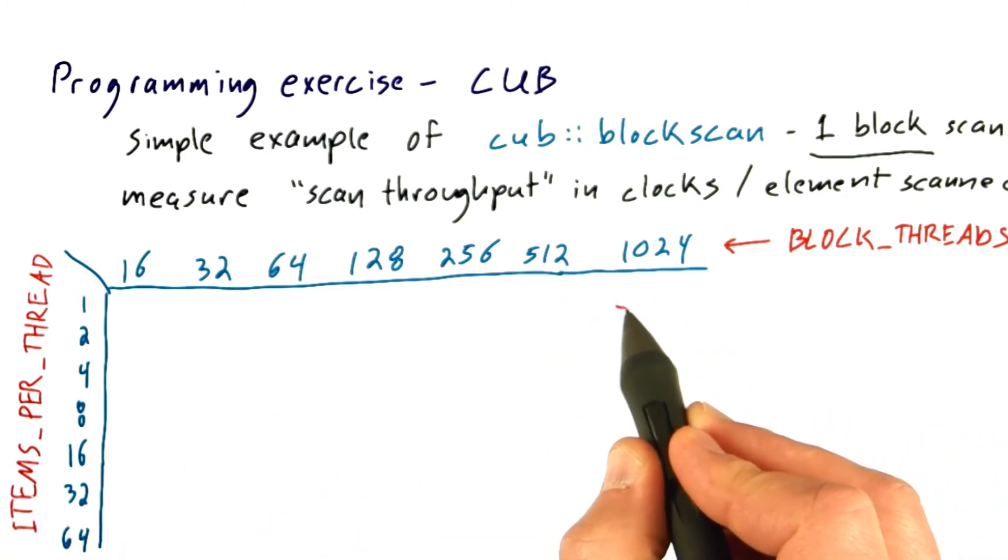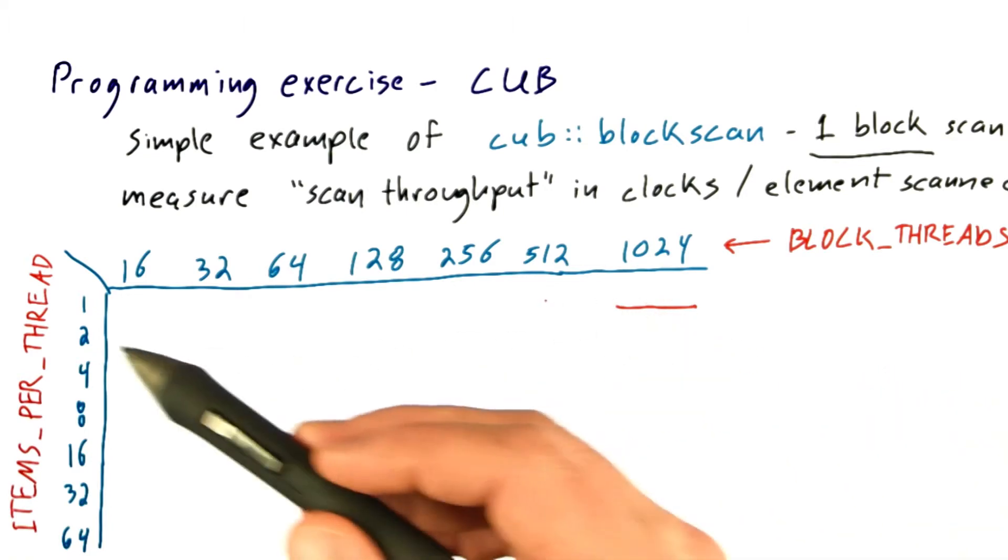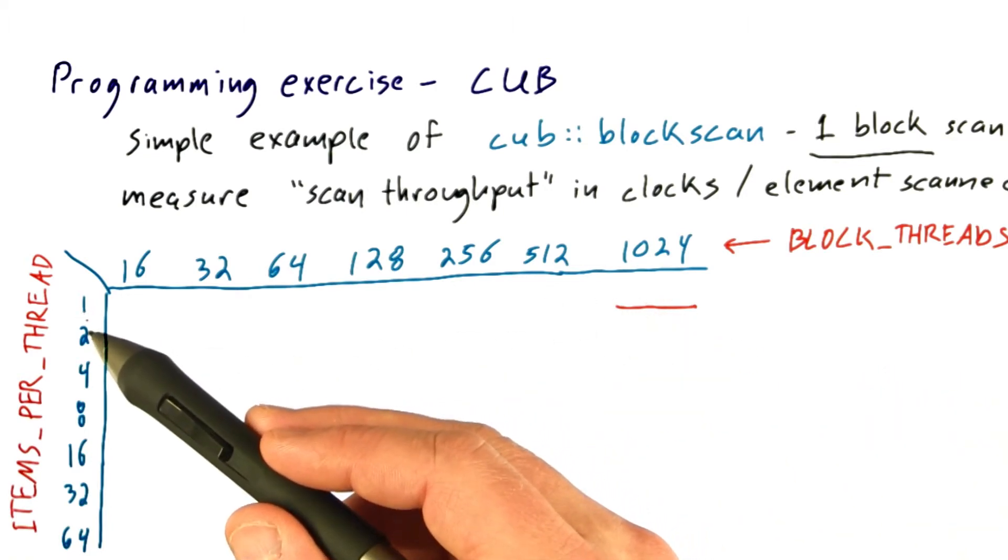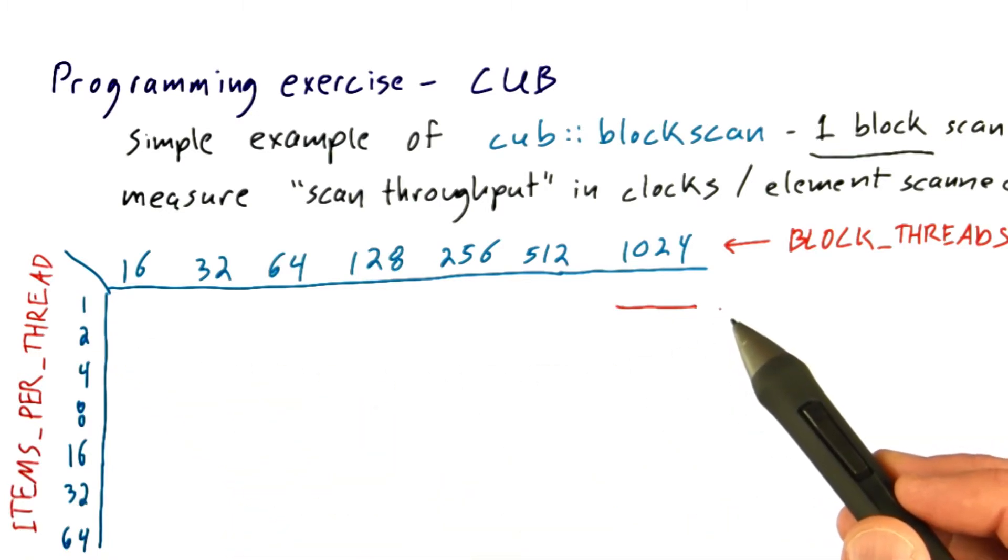For example, 1,024 threads, each scanning a single item per thread, is the kind of thing you might code up naturally. It might be the first thing you try—it's the simplest to code up.